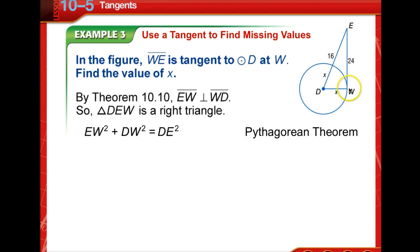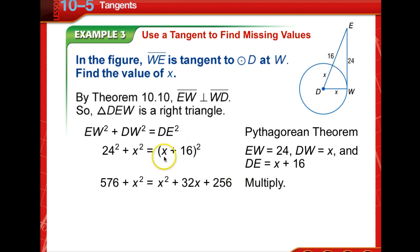So A squared plus B squared is equal to C squared. So 24 squared plus X squared is equal to X plus 16 squared. So we FOIL this one out.